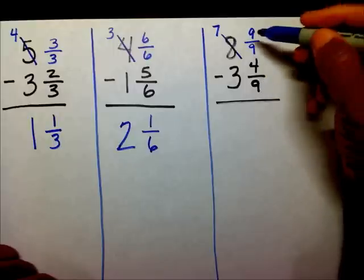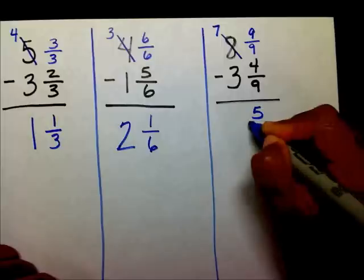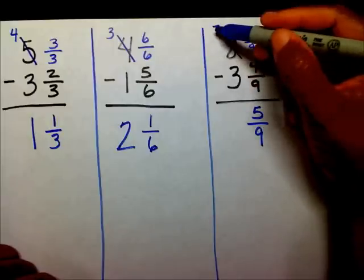So, now I can subtract nine minus four, which is five, over nine. And, don't forget about your whole numbers. Seven minus three is four.